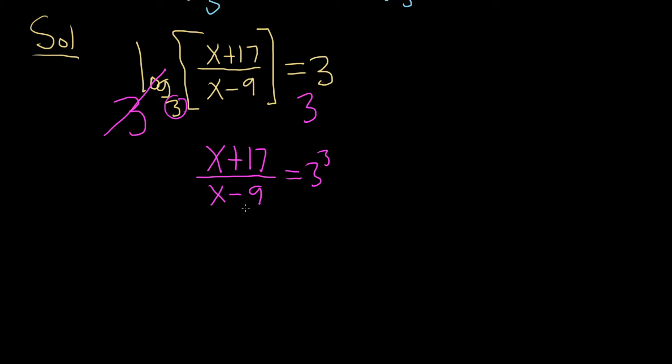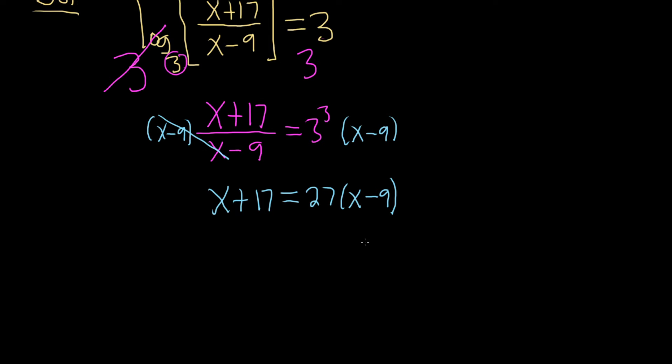Let's go ahead and clean up these fractions. We'll multiply both sides by x minus 9. So you cancel. So you get x plus 17 equals, 3 cubed is 27, so this is 27 times x minus 9. Big numbers. I have a calculator with me here, so that's good.